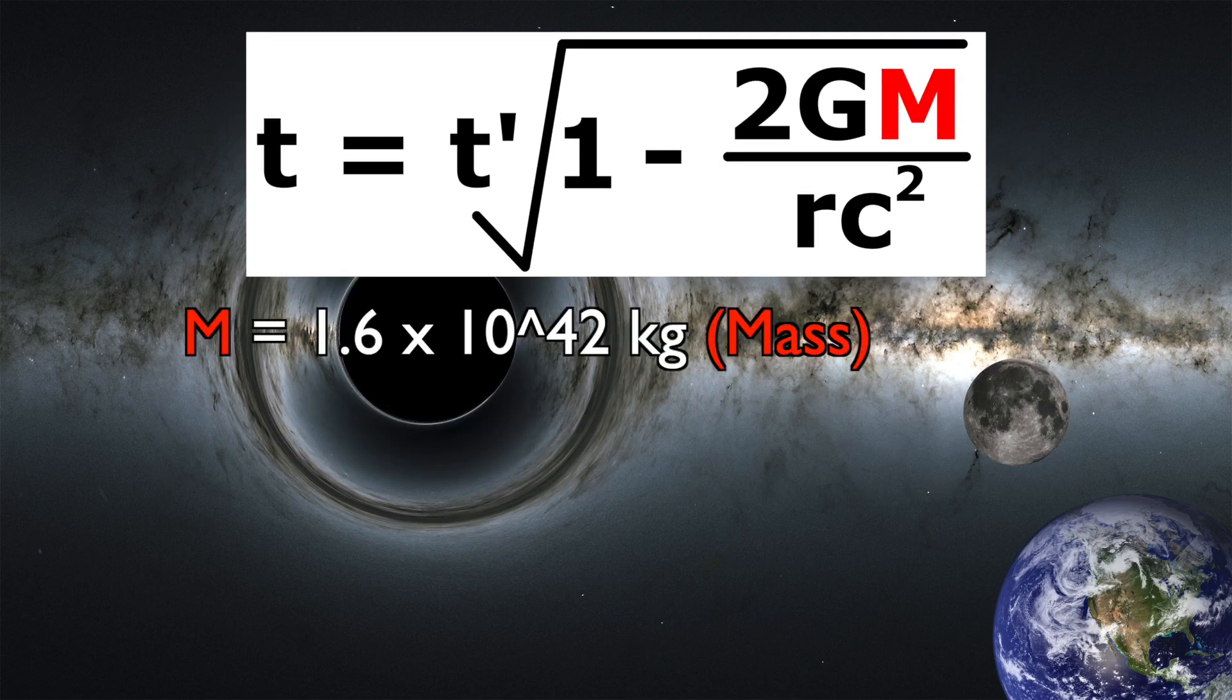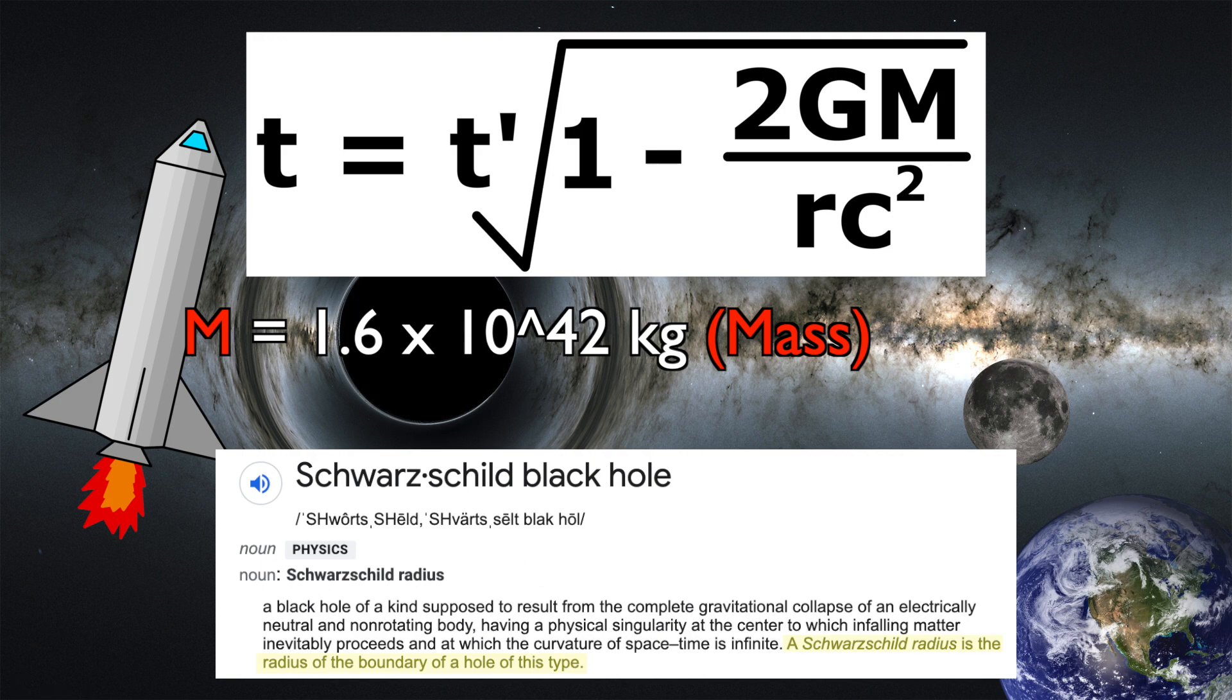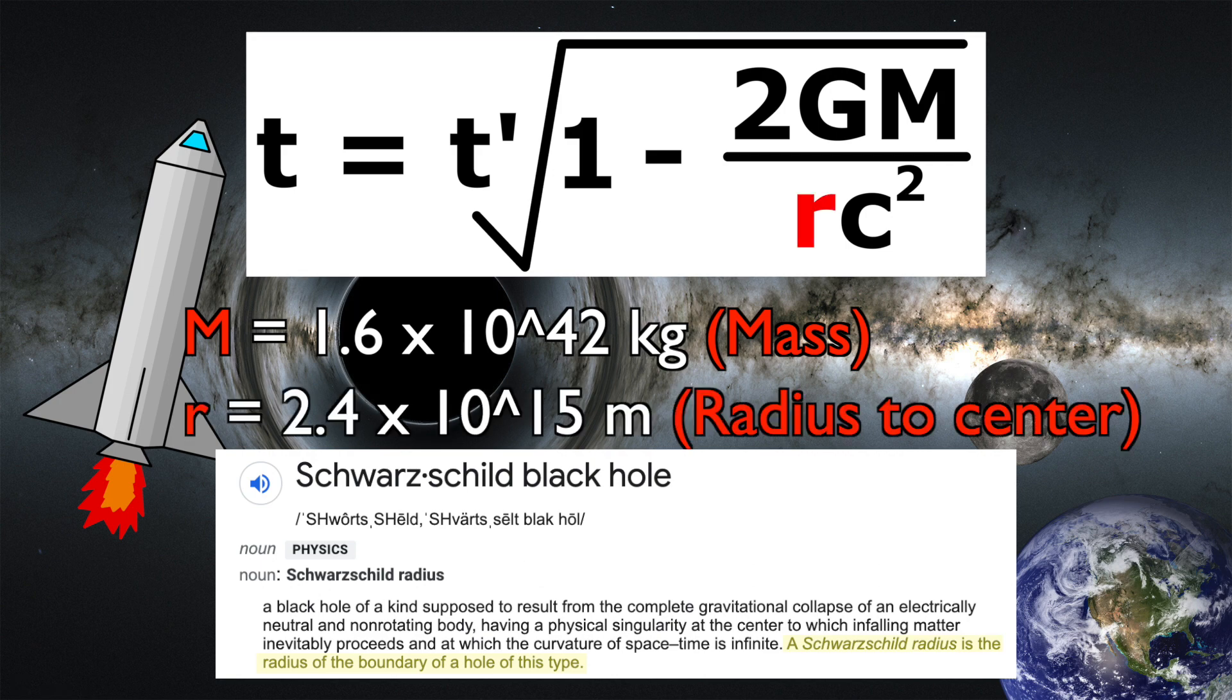The letter M in the equation stands for the mass of the black hole. We're also going to keep our rocket in orbit just outside the event horizon so we don't get sucked in. This is called the Schwarzschild radius and is 240 trillion meters from the center of Sagittarius A.